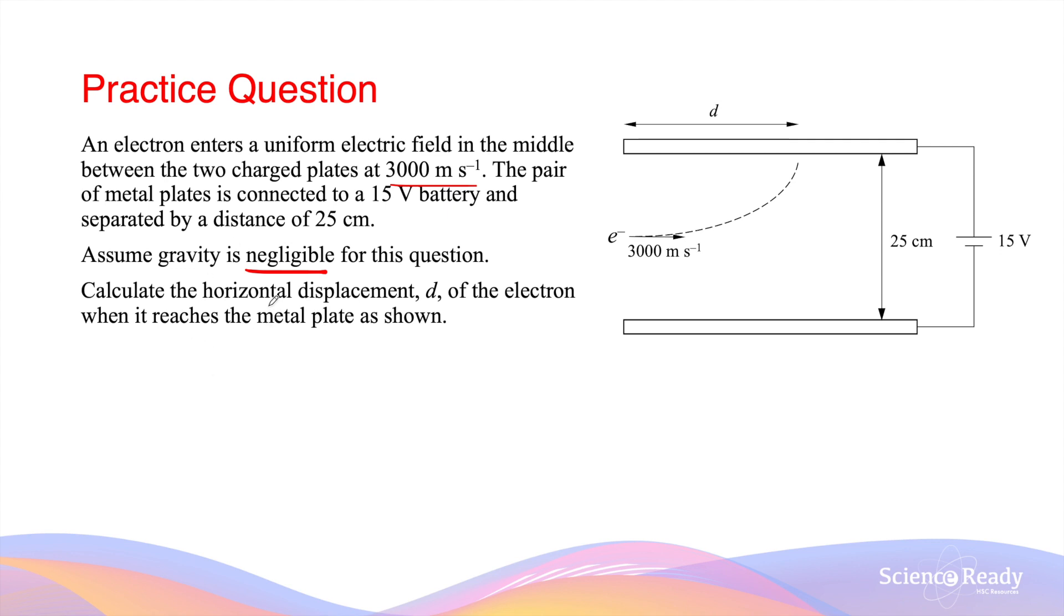We can calculate the acceleration due to the electric field by first finding the force due to the electric field. This is given by the charge of the electron multiplied by the strength of the electric field. The strength of the electric field is given by the voltage between the two metal plates divided by the distance between them. So this is 15 volts divided by 0.25 meters, which gives us 60 volts per meter.